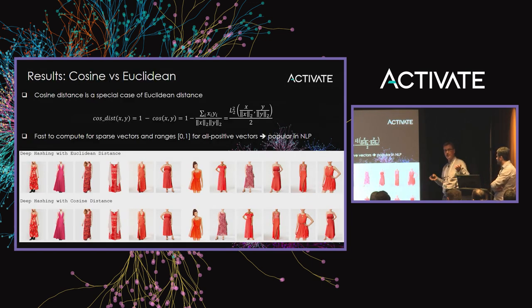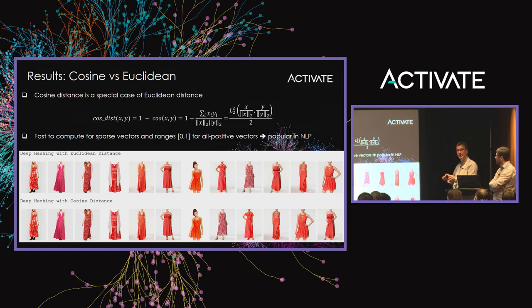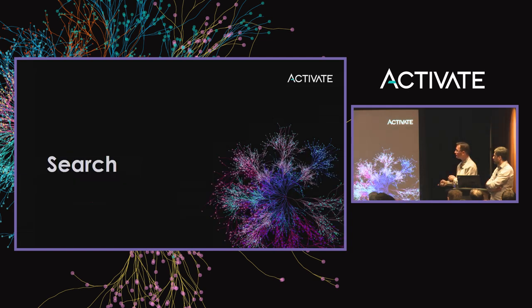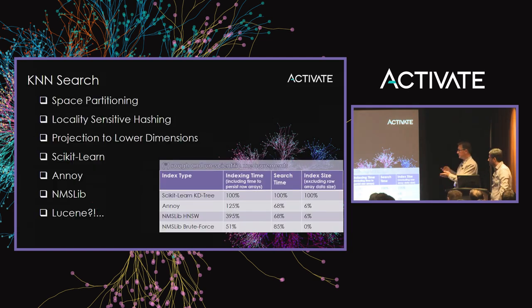Many people from the Lucene world wonder about cosine distance. Cosine distance is just a special case of Euclidean distance — it's the squared Euclidean distance of normalized vectors. There's not much difference searching with cosine versus Euclidean distance. In images, people usually use Euclidean; in text we use cosine because it's convenient, very fast for sparse vectors, and fits nicely in a range of 0 to 1.